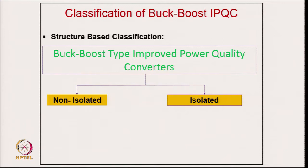For structure-based classification, converters are classified as non-isolated and isolated. Non-isolated topologies require a constant or variable DC supply. For isolated configurations, there are many applications since electronic gadgets often need an isolated supply. Isolation is provided using a high-frequency transformer, which also reduces size, cost, and weight while increasing efficiency.